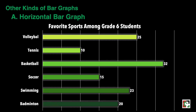Based on the bar graph, we can interpret the following. Number one, basketball is the most preferred sport among grade 6 students. Number two, tennis is the least favored sport among the students. Third, there are 25 students who prefer volleyball. And fourth, soccer is the second least favorite sport among grade 6 students. And last, there are 125 students surveyed.